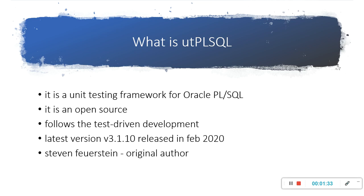We normally execute these manually and see the results. For example, if there is a stored procedure to be tested — to check for any DML operation, to see whether records have been inserted, modified, or deleted — we normally run the Oracle code and verify the results in the back-end table. So it's all manual. That is how we normally do unit testing.